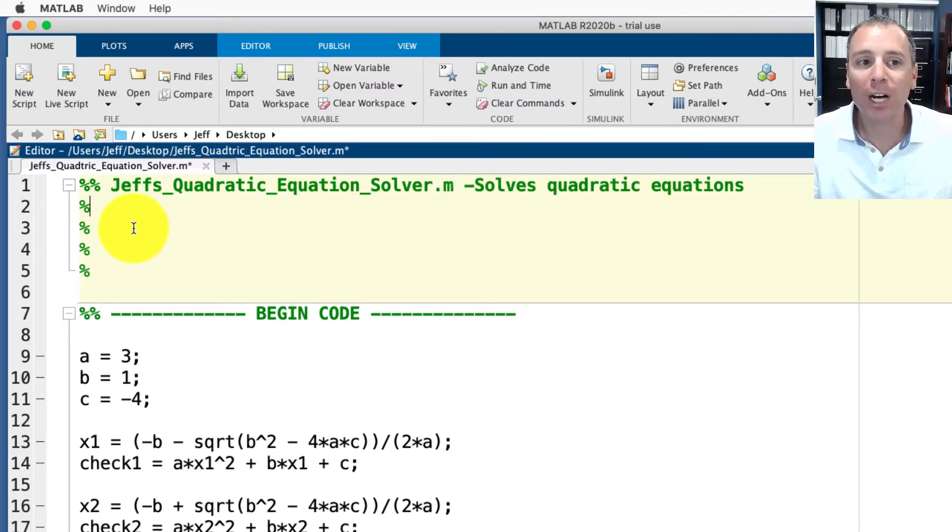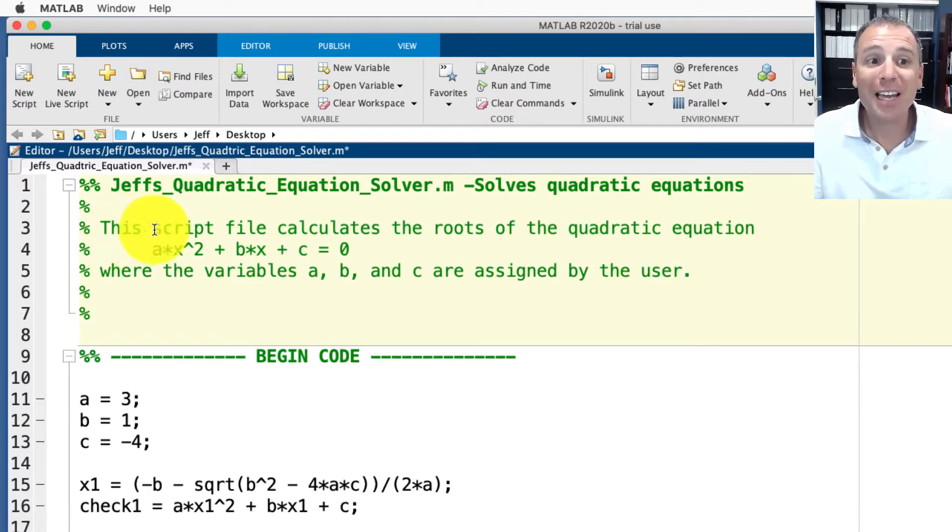Once we have the title of our script file and then a short description of what it does we're gonna add additional help documentation. The first question we're gonna answer in our additional help documentation is what problem does this code solve? In this case we see this script file calculates the roots of the quadratic equation a times x squared plus b times x plus c equals zero where variables a, b, and c are assigned by the user. This immediately tells my readers what this script file is designed to do.